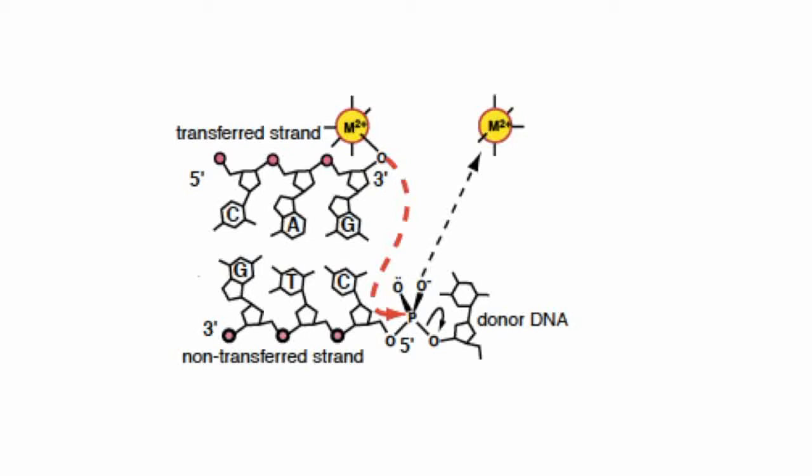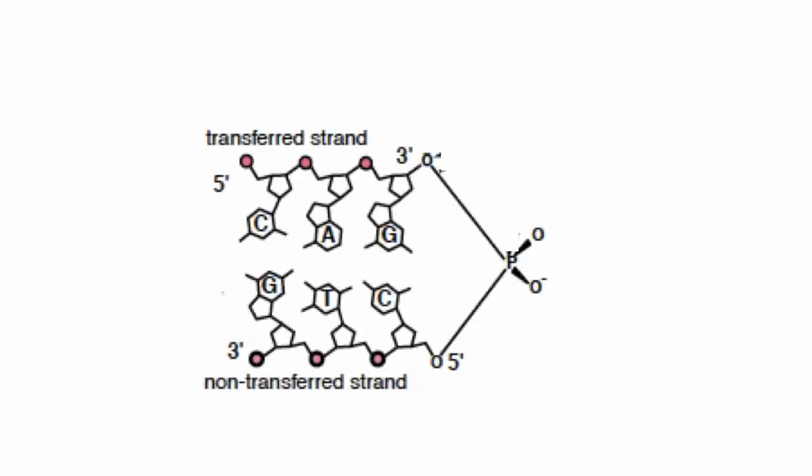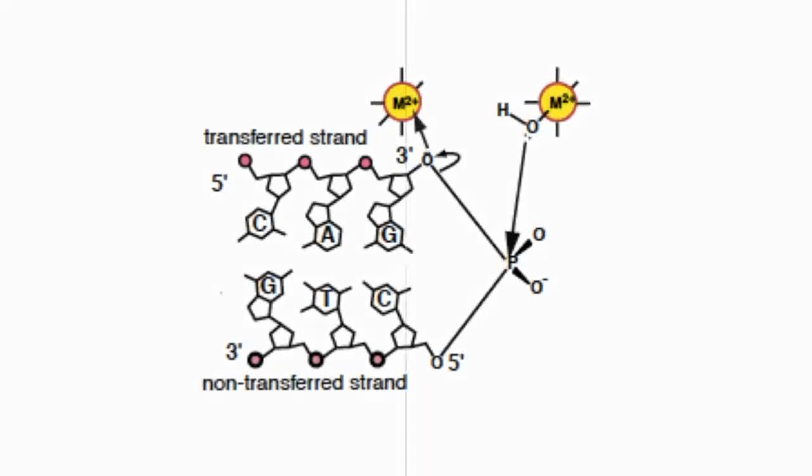The hairpin intermediate releases this segment of DNA from the donor DNA. The final step is a resolution of the hairpin. Another activated water molecule attacks the phosphate and cleaves the bond with the 3' oxygen. Strand transfer occurs by a transesterification reaction.